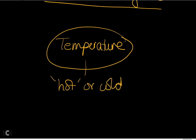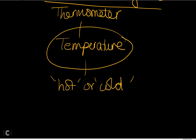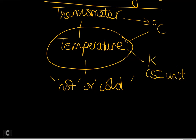Temperature is a quantitative measure of heat energy. It is measured by an instrument called the thermometer, and there are two units for temperature: degrees Celsius, measurable using a thermometer, and the SI unit, which is the Kelvin.